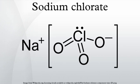Sodium chlorate is an inorganic compound with the chemical formula NaClO3. It is a white crystalline powder that is readily soluble in water. It is hygroscopic. It decomposes above 300 degrees Celsius to release oxygen and leave sodium chloride.